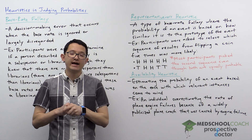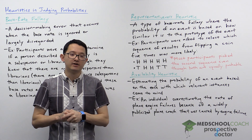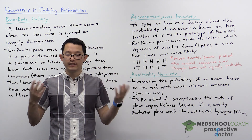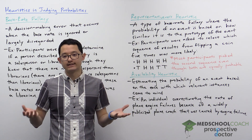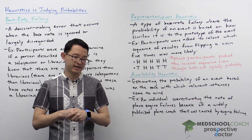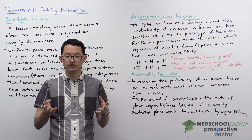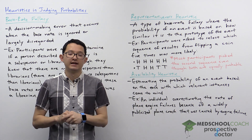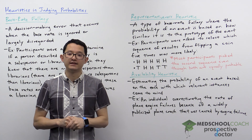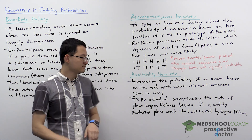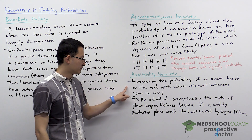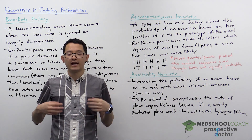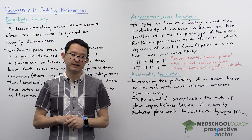Another example is if you ask an individual to predict what the divorce rate is in the US, they will think about instances they can recall. So let's say recently one of the individual's friends' parents got divorced — that person is likely to overestimate the divorce rate. So that's the availability heuristic: estimating the probability of an event based on how many relevant instances come to mind.